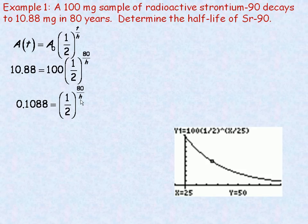And so now I want to solve for h. h is in the exponent, so I'm going to convert this to its equivalent logarithmic form. The exponent, the 80 over h, would equal the logarithm of 0.1088 base one-half. Remember that the base of the power, one-half, is the same as the base of the logarithm.